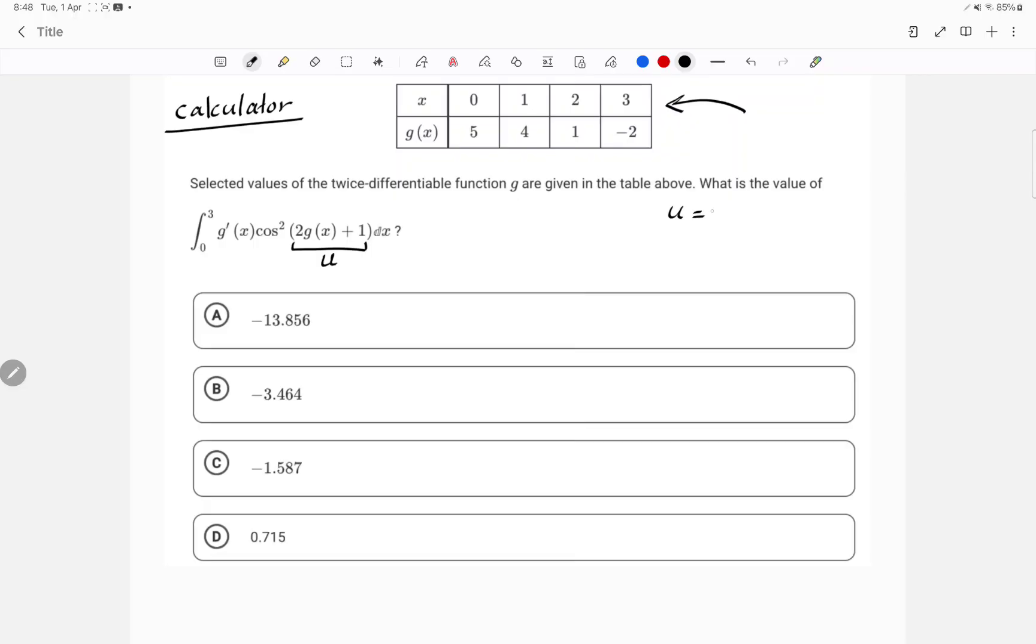So here u is equal to 2g(x) plus 1. And therefore, if you differentiate both sides, du is equal to 2g'(x)dx. Now I already have my g'(x)dx here, so I'm going to say my g'(x)dx is equal to du over 2.